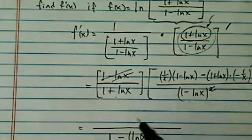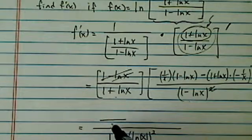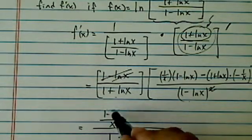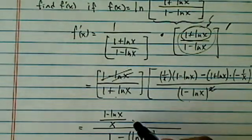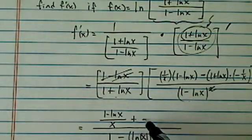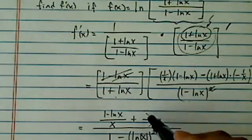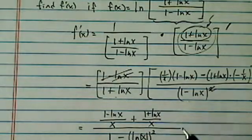And then on the top, I have two fractions. I have x here, 1 minus natural log of x. Since there's a minus, minus, I have a plus sign. Now x is here, 1 plus natural log of x.